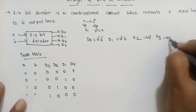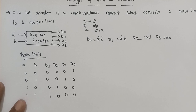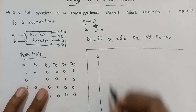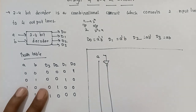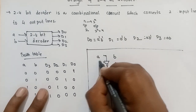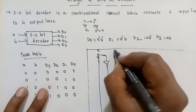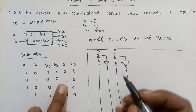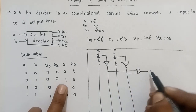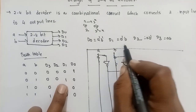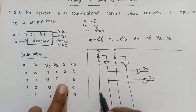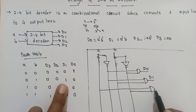The final step is to draw the circuit diagrams for the simplified Boolean expressions required for the 2-to-4 bit decoder. We have input A with its inverter line, and input B with its inverter line. D0 output is A'B', D1 output is A'B, D2 output is AB', connected through AND gates.